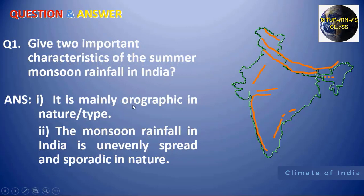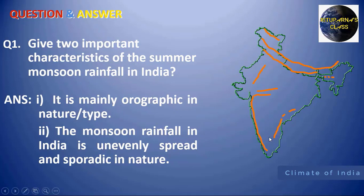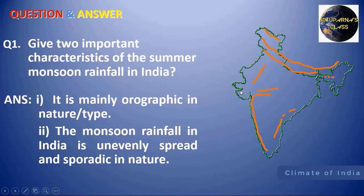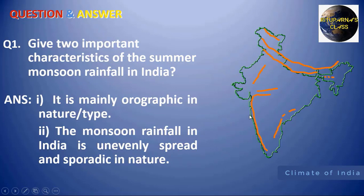The first characteristic is that it is mainly orographic in nature. The meaning of orographic is relief — that means the relief or the mountain controls the distribution of rainfall throughout India. Second, the monsoon rainfall in India is unevenly spread. From east to west, the amount of rainfall decreases. On the windward side of any mountain, rainfall will be heavy, and on the leeward side it will be low.